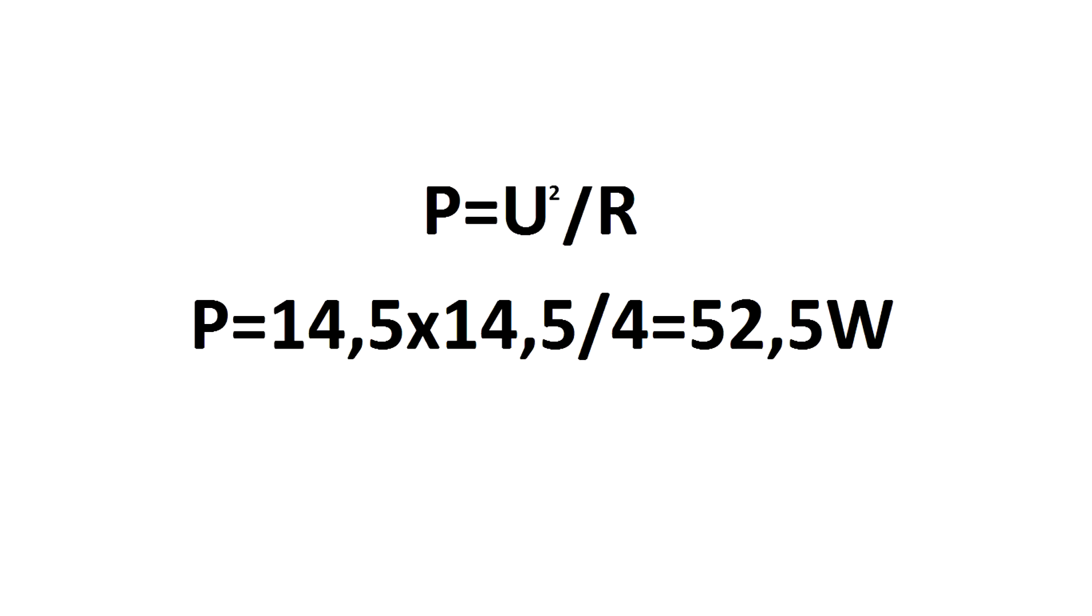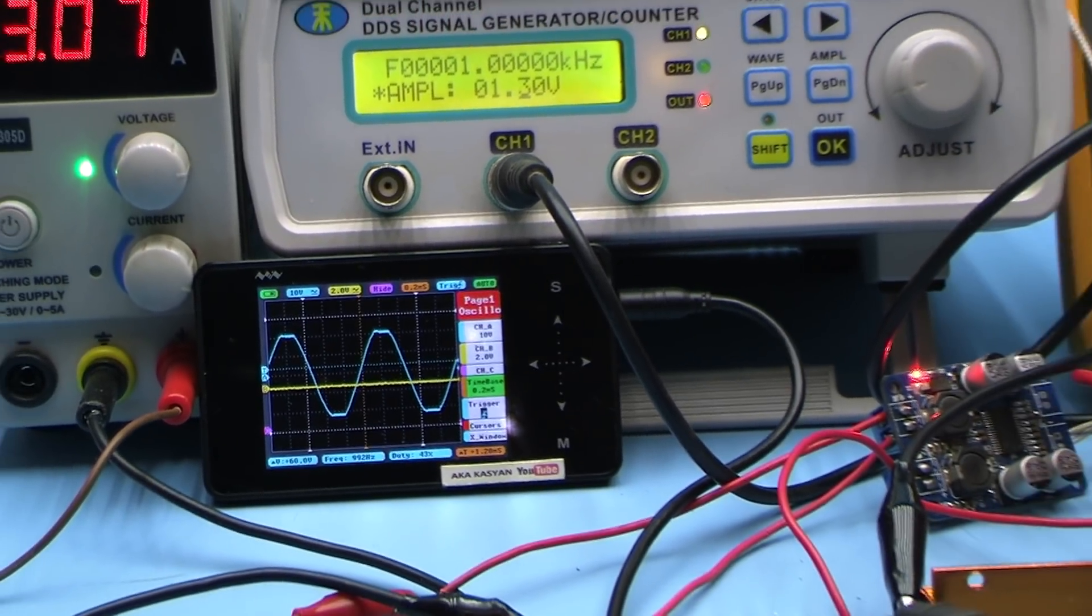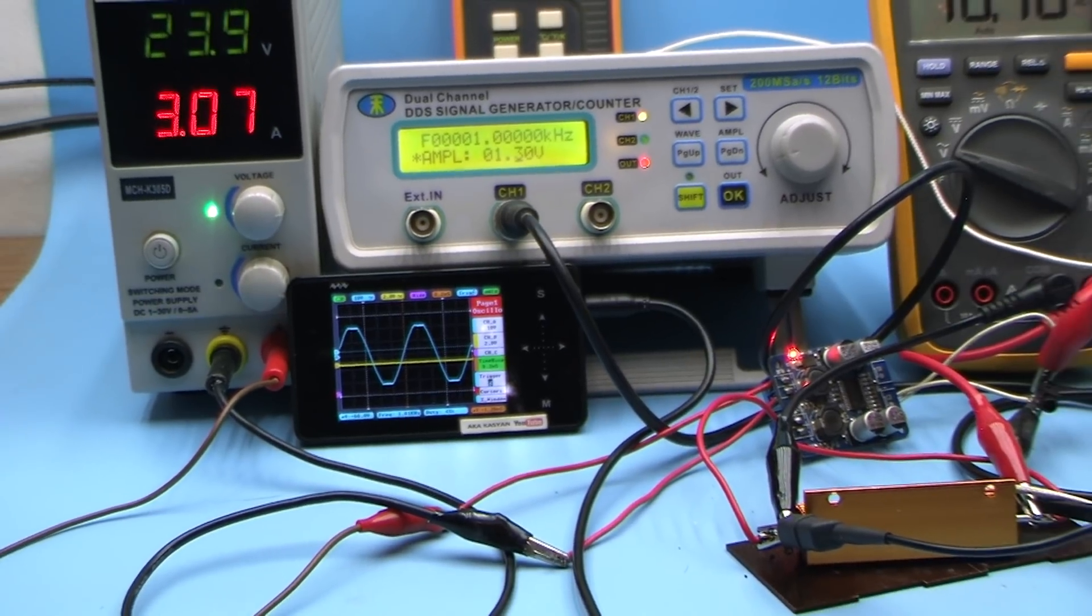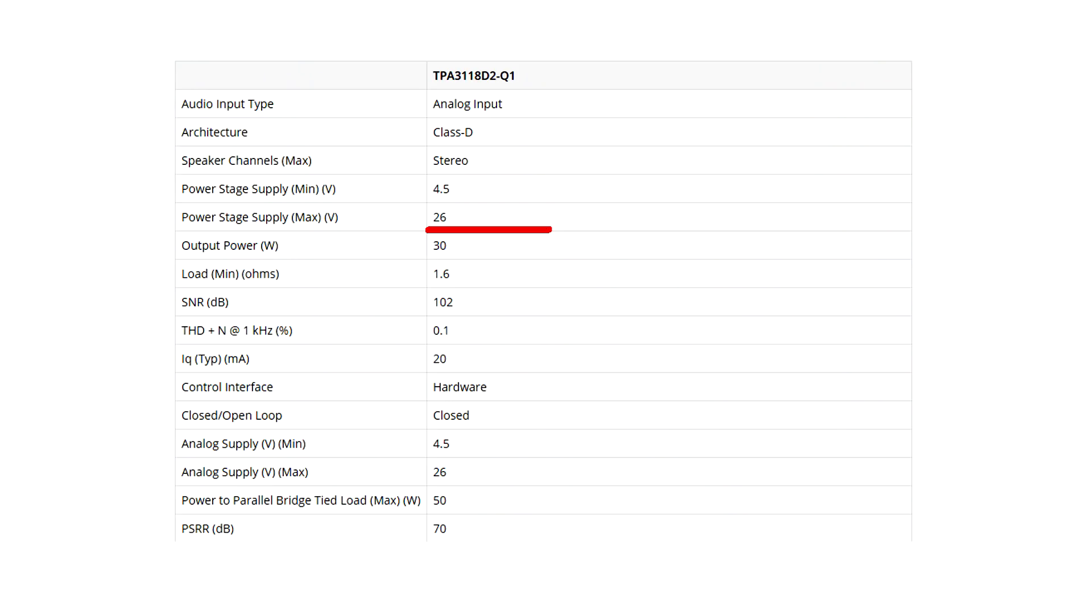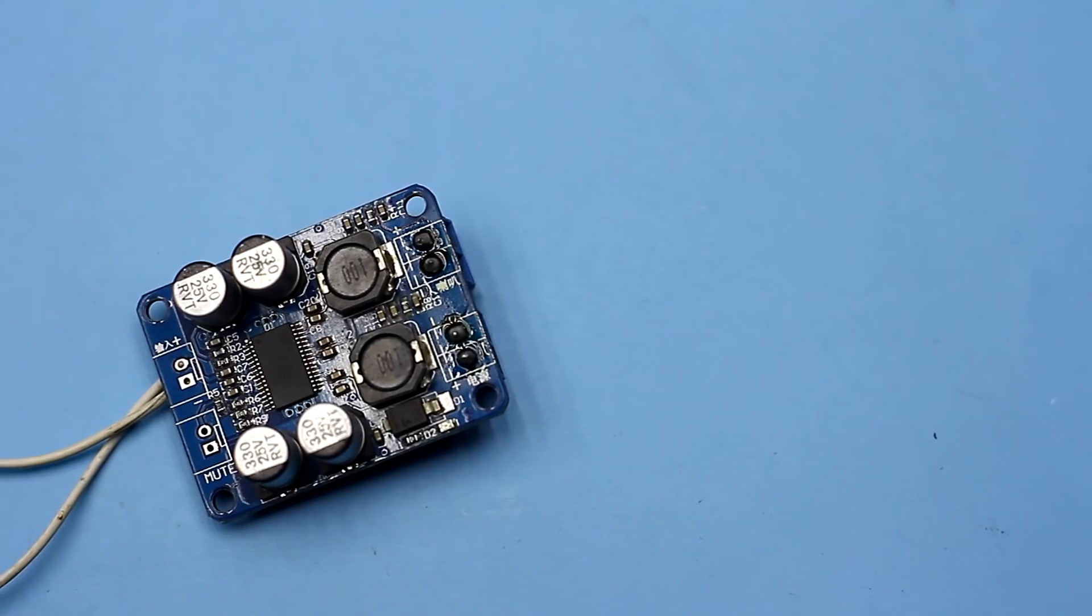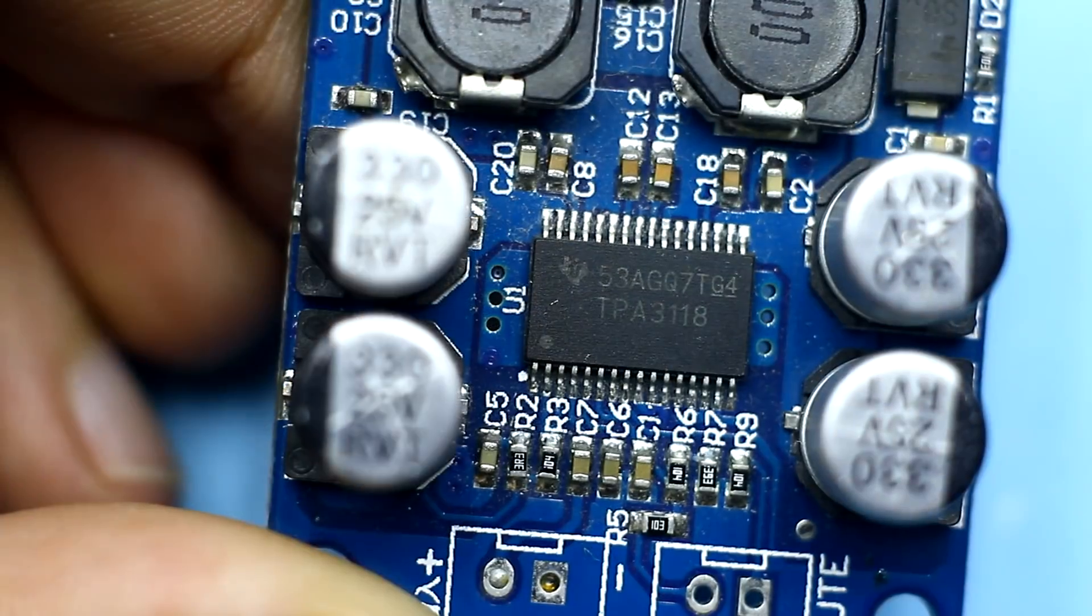As a result, using this formula, we got an output power of about 53 watts. If we take into account all the losses and the fact that we applied only 24 volts to the board, but according to the datasheet it is allowed up to 26 volts, I think 60 watts is quite capable to obtain.